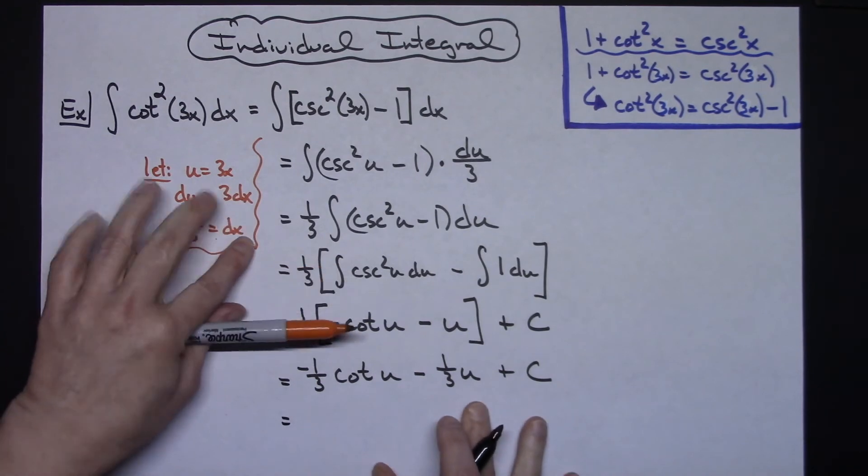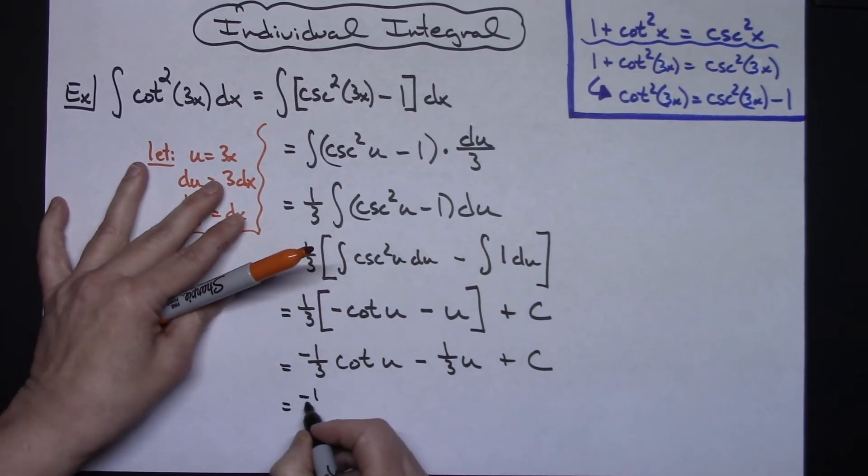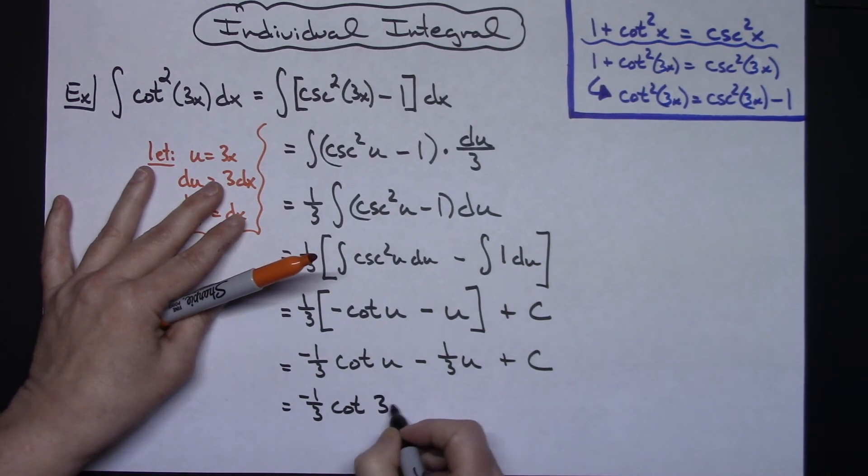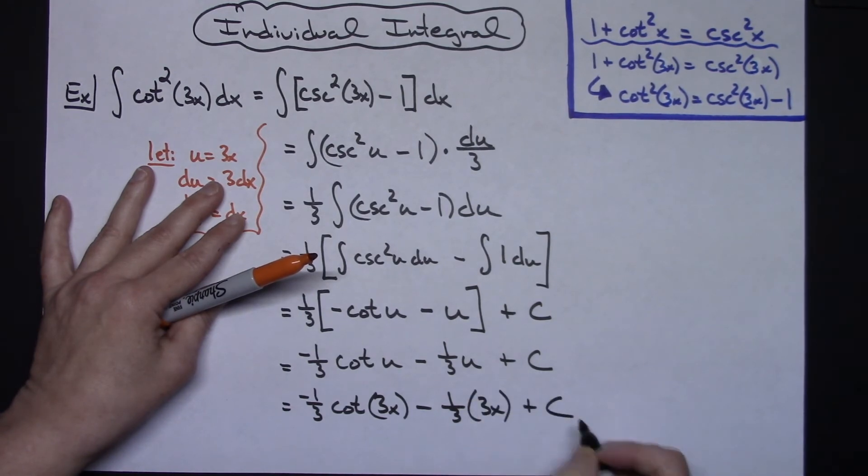And then replacing my u with what it is, which is 3x, I'll then have a negative 1/3 cotangent of 3x minus 1/3 times 3x and then plus C.